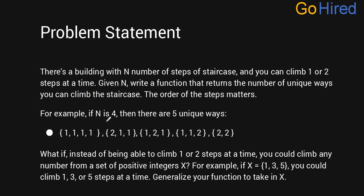For example, if n equals 4, you can reach it in 5 unique ways: 1-1-1-1 means you climb one step each time, or 2-1-1 means you take a first jump of two staircases and then take one jump and another jump. In this way there are five unique ways.